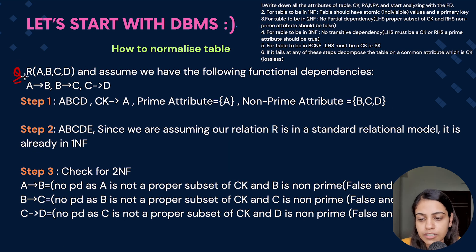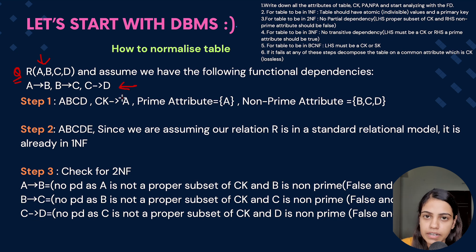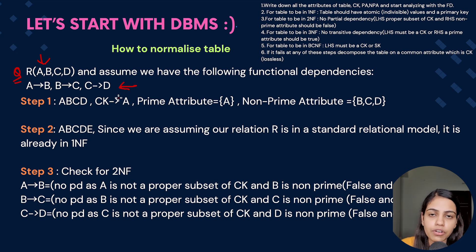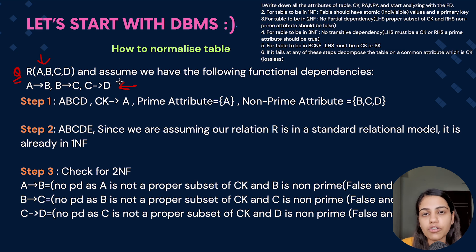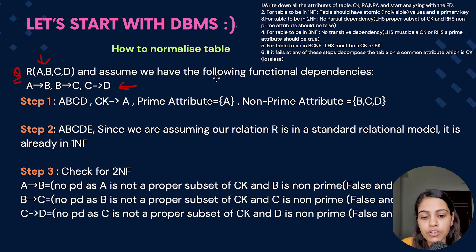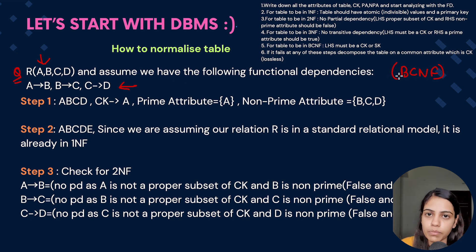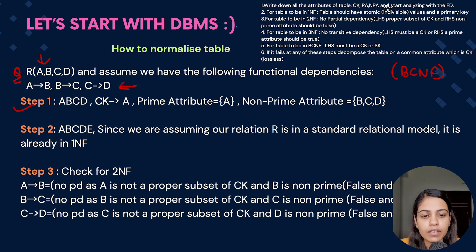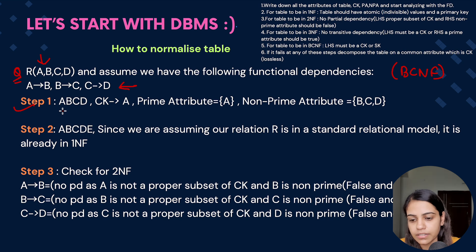Let's understand from a practice problem where we have been provided with a relation and functional dependencies, and we have to see if the table is normalized or not. If the table is normalized, we will check for the higher normal forms. If it's not normalized, we will decompose it and then again check for the higher normal form, up to BCNF.